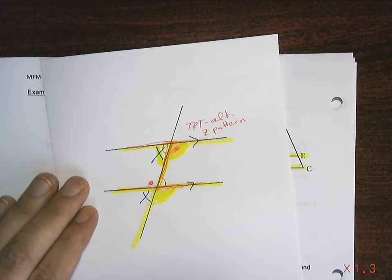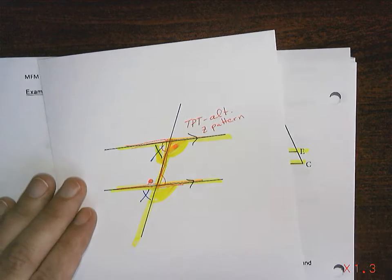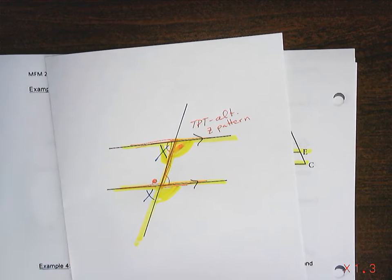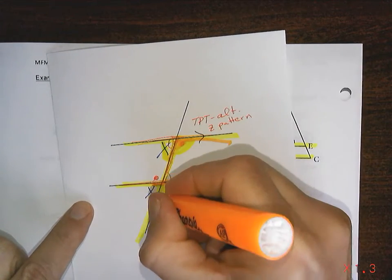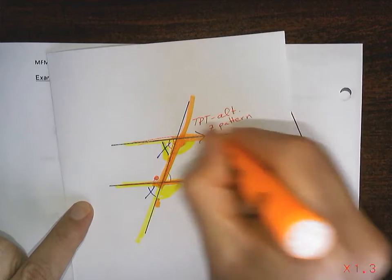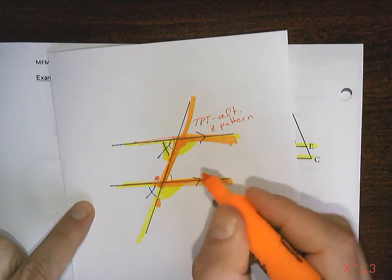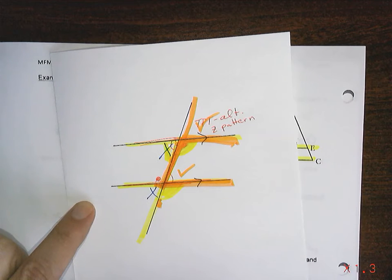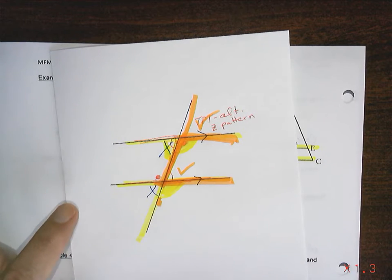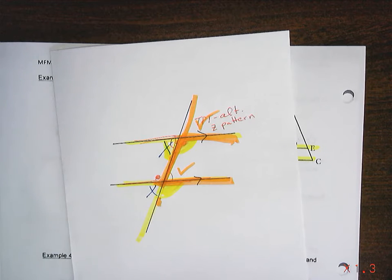They also taught you to look for upside down F's. An upside down F might be here, going that way. So here's my upside down F meaning that this angle will equal this angle will equal this angle. And we played with that for a while. So there was the Z pattern and the F pattern that we played with.